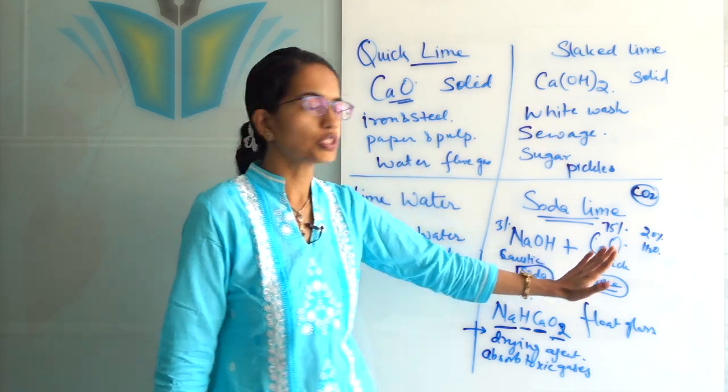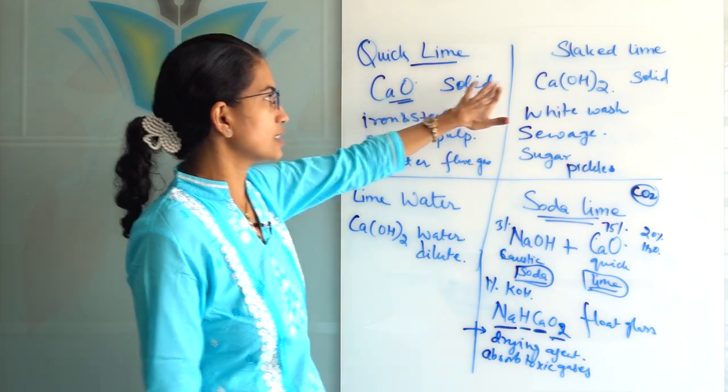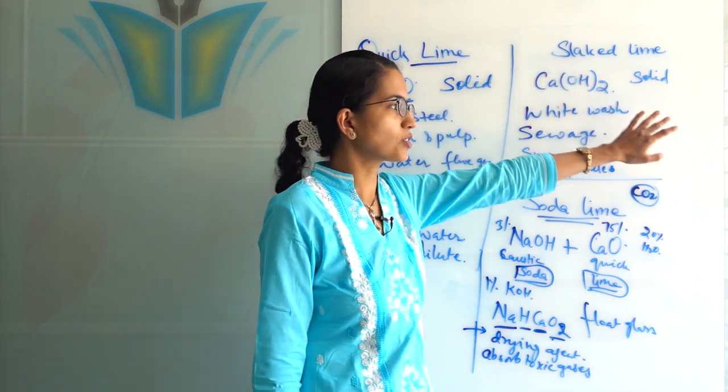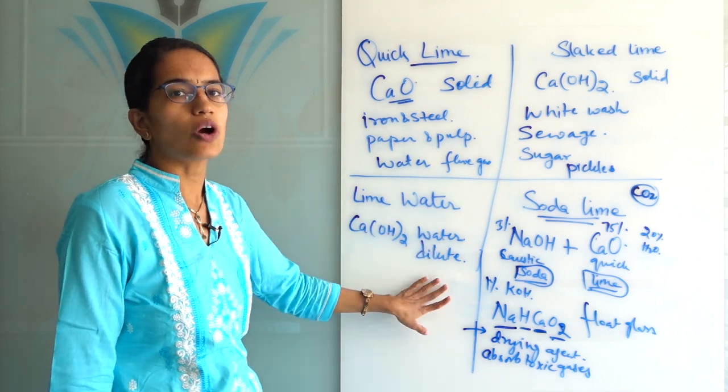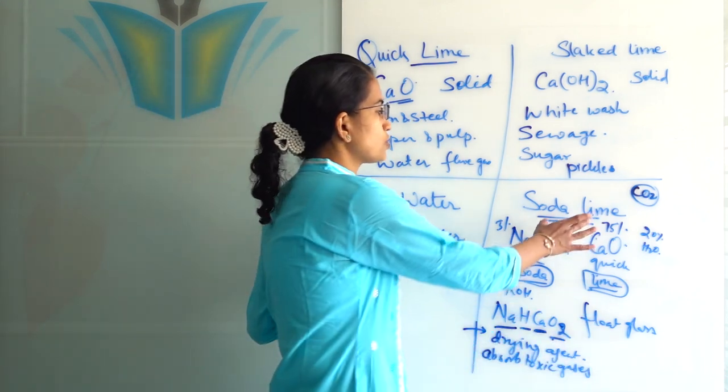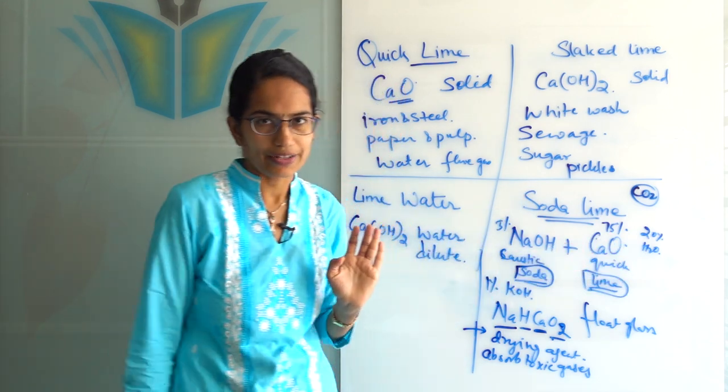So in this lecture we have understood the clear difference between four of those terms. Quick lime is calcium oxide in solid state. Slaked lime is calcium hydroxide in solid state. Lime water is calcium hydroxide in liquid state or in the dilute form and soda lime is a composition of calcium oxide and sodium hydroxide.